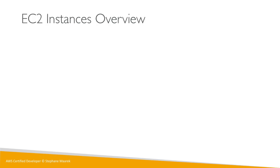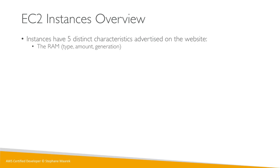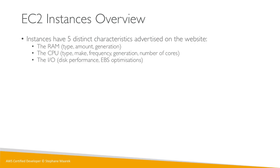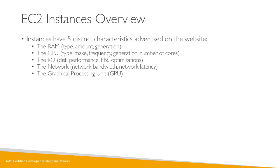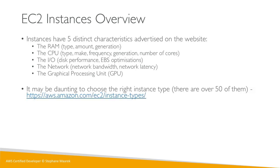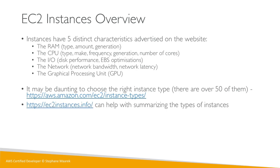For EC2 instance types, when you go to the AWS website there are five distinct characteristics: RAM (amount and generation), CPU (number of cores, type, frequency, generation), IO (disk performance, EBS optimization), Network (speed — low, medium, high — and latency), and GPU. There are over 50 different instance types on EC2 and growing. There's a website called ec2instances.info that helps summarize the available instance types.